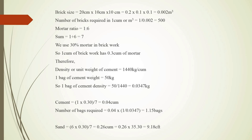Next we find the sand calculation. Sand equals 6 × 0.30 divided by 7. The 6 comes from the mortar ratio, 0.30 from the mortar volume in 1 cubic meter of brickwork, and 7 from the sum of the mortar ratio, giving 0.26 cubic meters. To convert to cubic feet, multiply by 35.30, which equals 9.28 cubic feet.